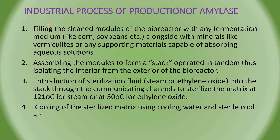Coming to the industrial process of production of amylase: initially, the bioreactors are filled with fermentation medium — it may be corn medium, sorbine medium, or any starch medium. Along with this fermentation medium, some minerals like vermiculites or any supporting materials capable of absorbing aqueous solutions are added into the bioreactor. After that, the assembling of the modules in the form of stacks is done, which is operated in tandem, isolating the interior of the bioreactor from the exterior.